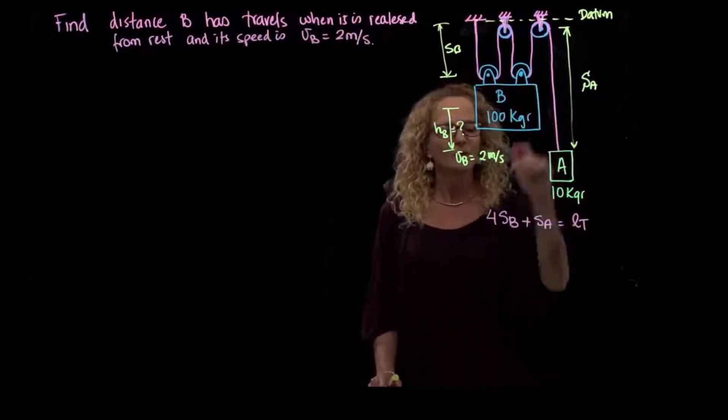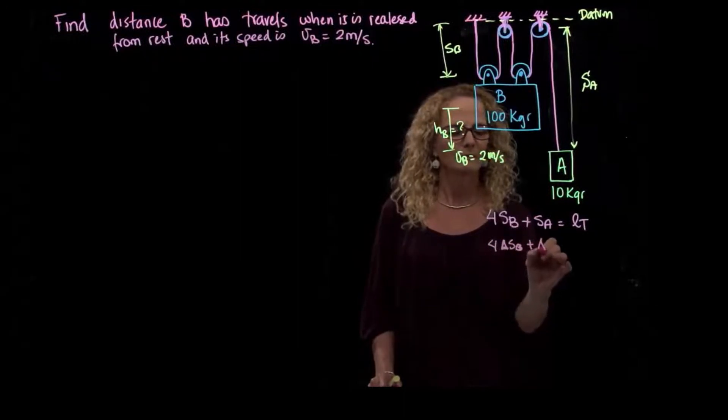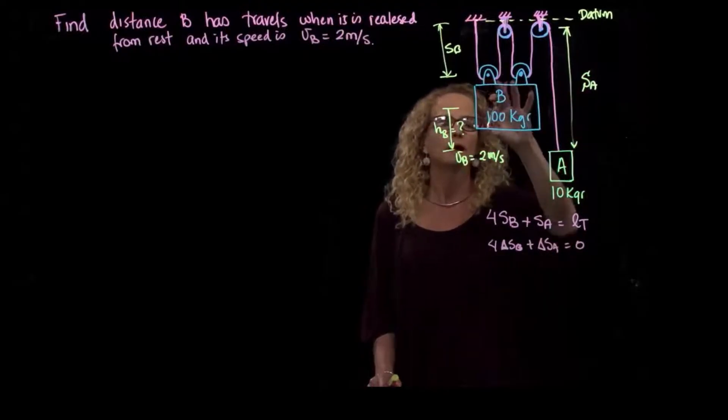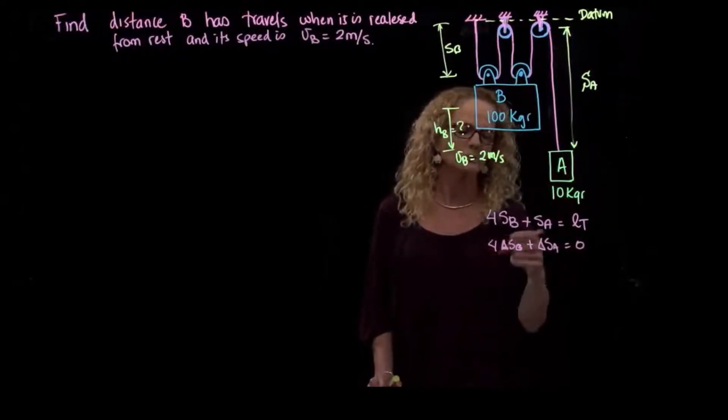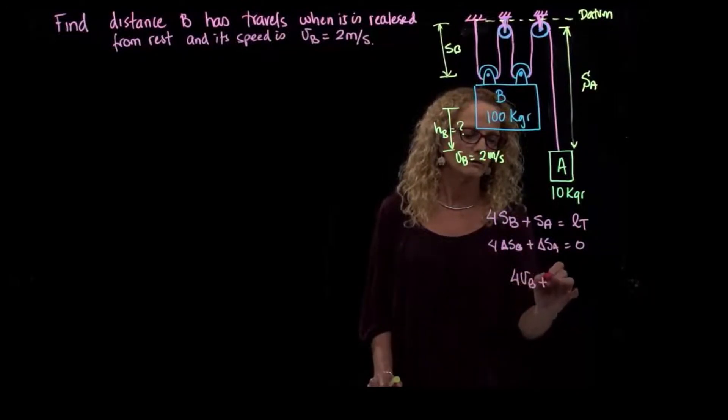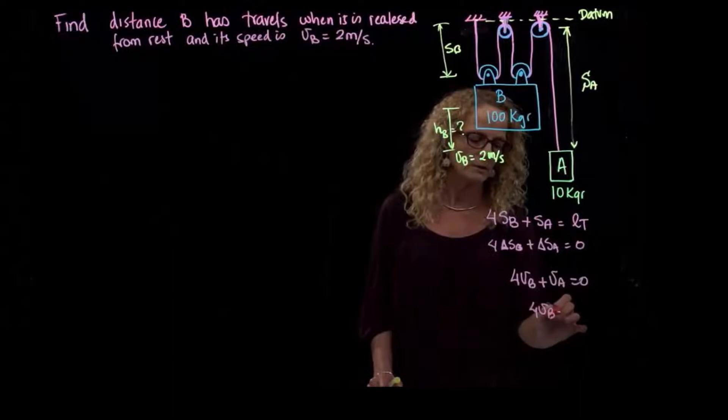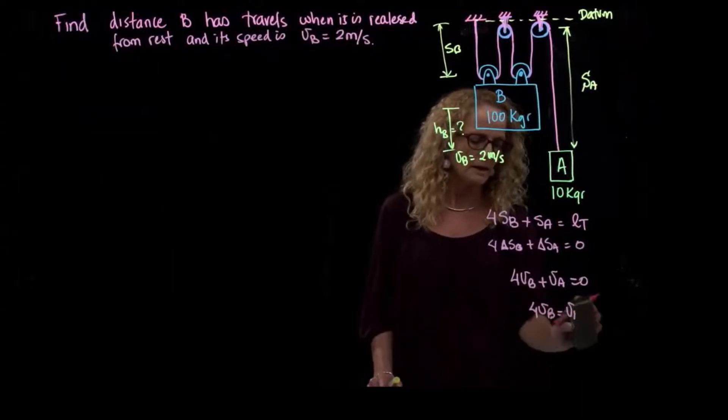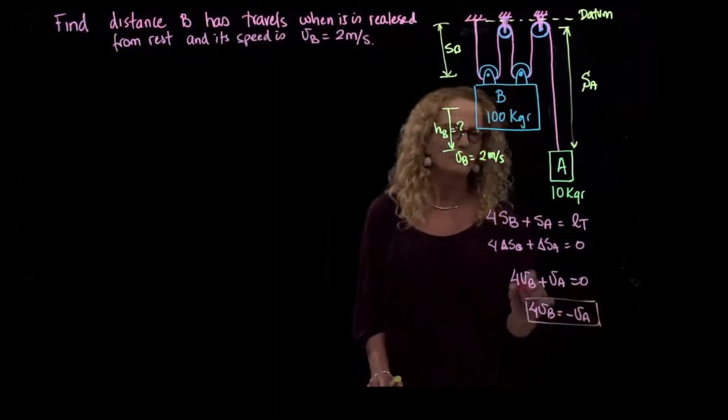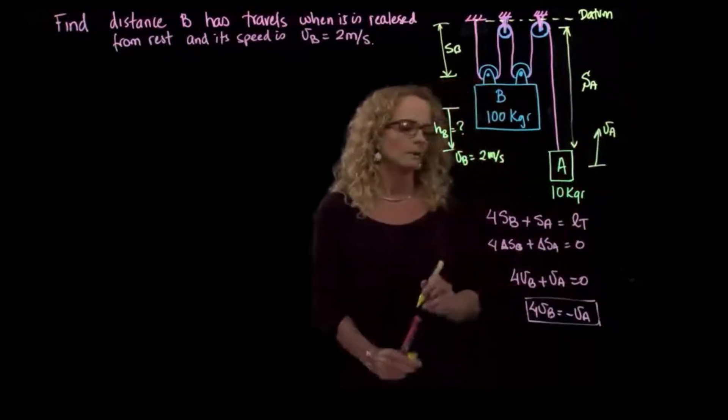we know that the variation of those distances will give me zero. It's like deriving that distance. It's like the relative velocity between that one and that one. So if I actually derive with respect to time, I can have that 4 times the velocity of B plus the velocity of A is equal to zero. So here I already get that the velocity of B will be equal to negative 4 times the velocity of A. What does that mean? It means that when my block B goes down, then my block A goes up, which makes sense.